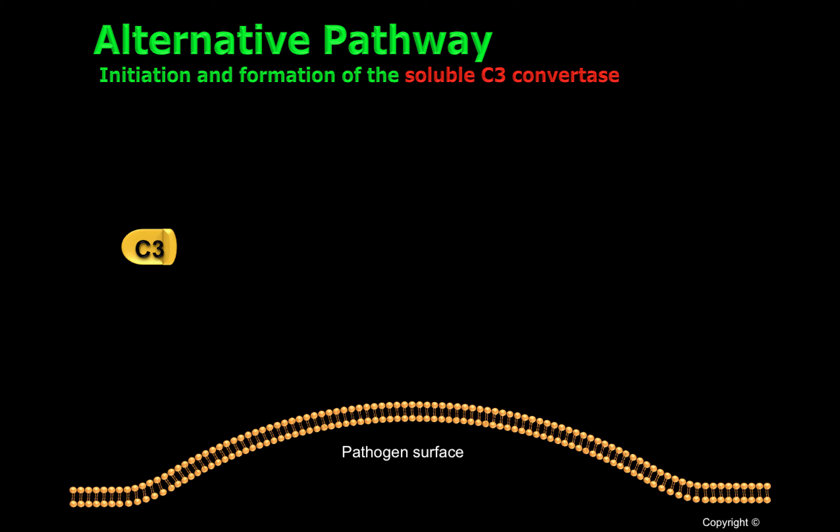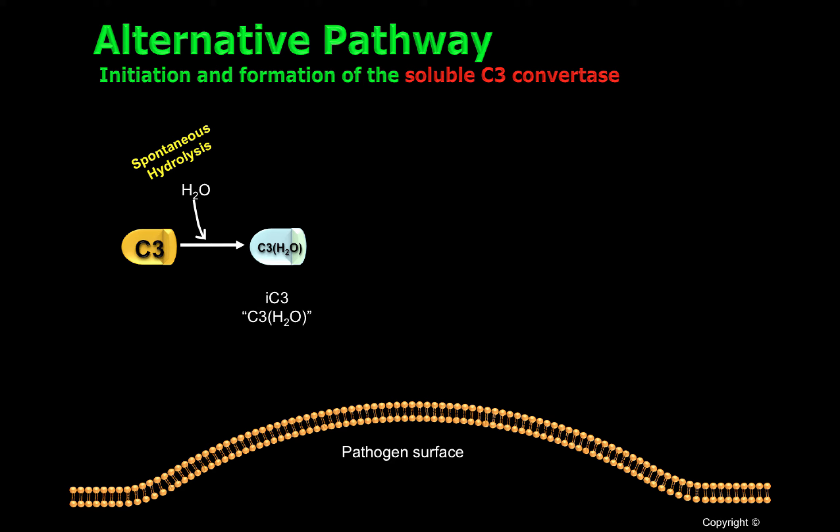C3, one of the most important components of the complement system found in plasma, sometimes gets hydrolyzed. Around 5% of C3 can get hydrolyzed, generating a component called C3 water, or intermediate C3, IC3.